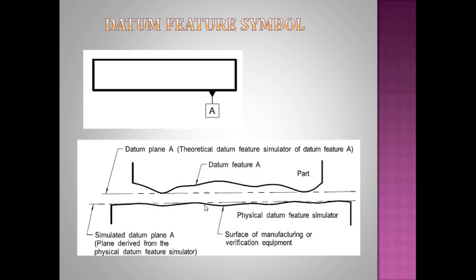The accuracy of that is better than the actual manufactured item. Here you can see two different things: one dashed line and the other one is continuous line. Dashed line indicates theoretically exact measuring instrument surface, whereas the dark line indicates it is a physical datum feature simulator. The measuring instruments also will have some variation.